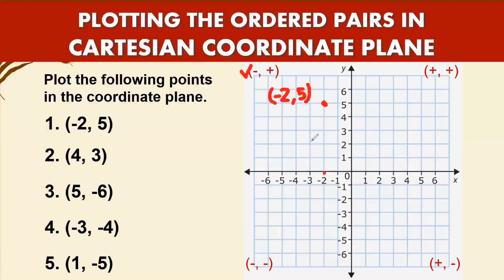Number two: four and three. Both four and three are positive, so you go to the right from zero to four, then go up three units. Plot and label the point four, comma three.